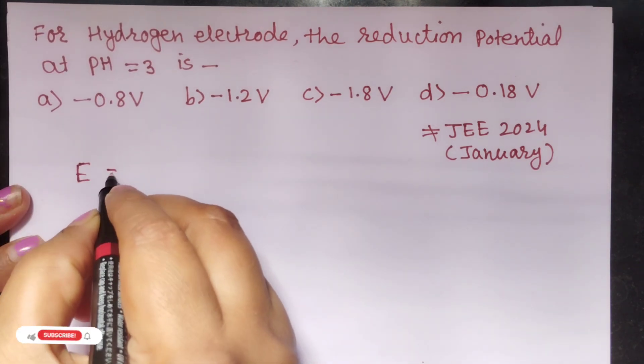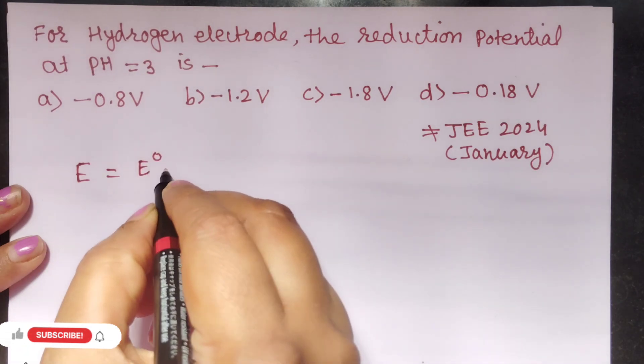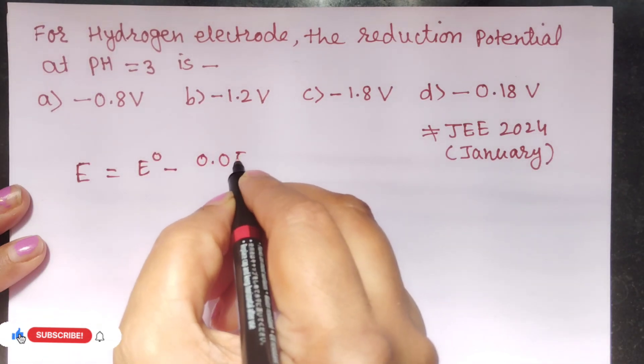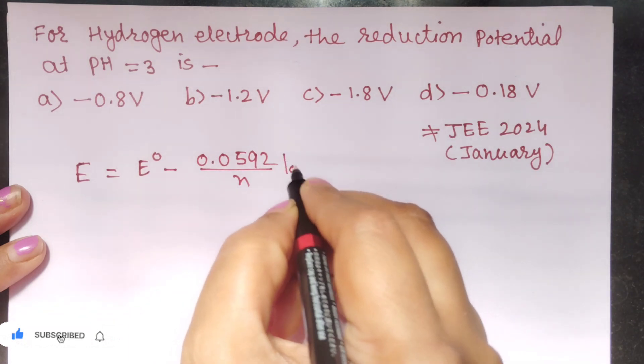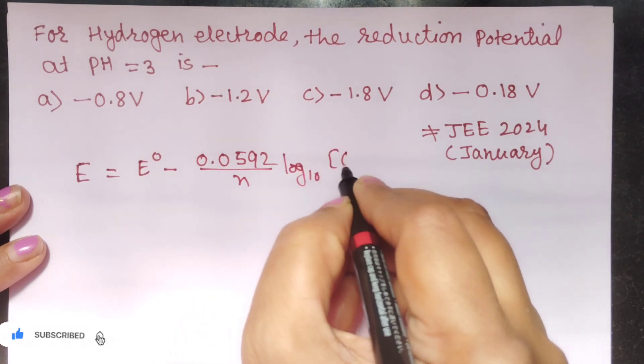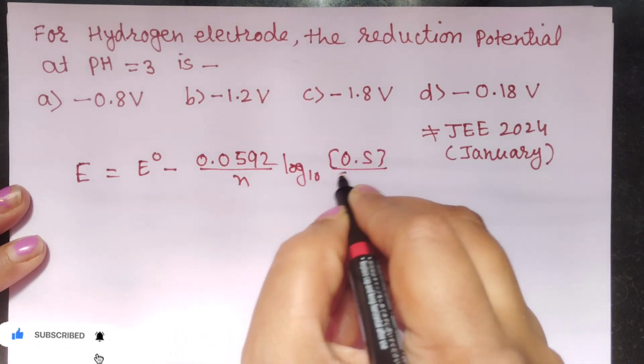E electrode is equal to E standard electrode minus 0.0592 divided by N log to the base 10 of oxidized state to reduced state.